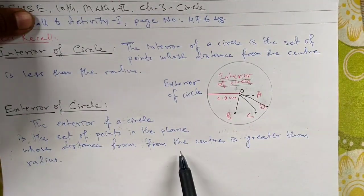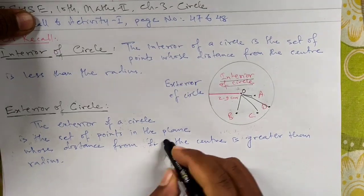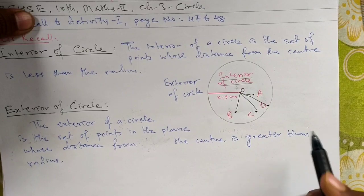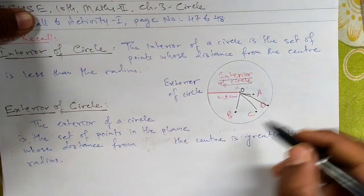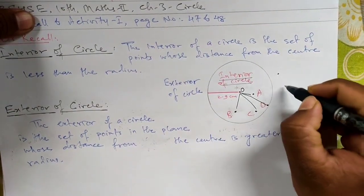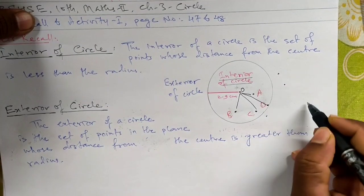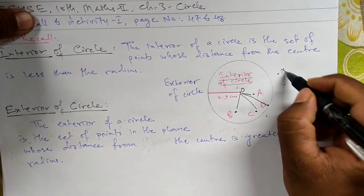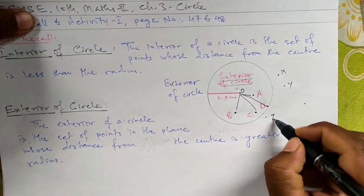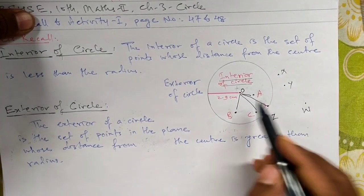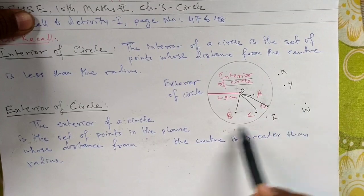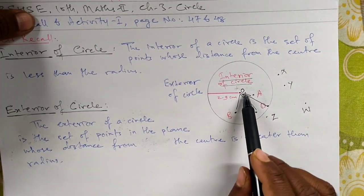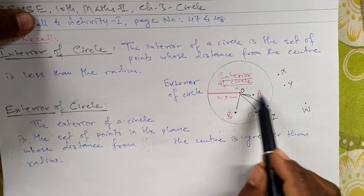The exterior of a circle is the set of points in the plane whose distance from the center is greater than the radius.